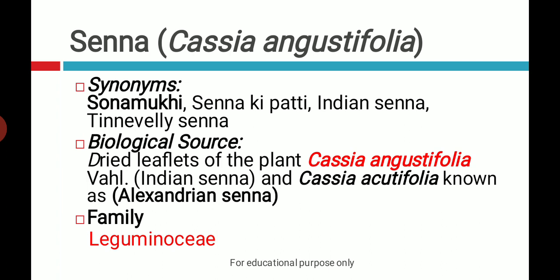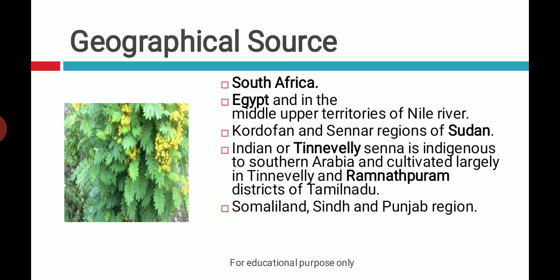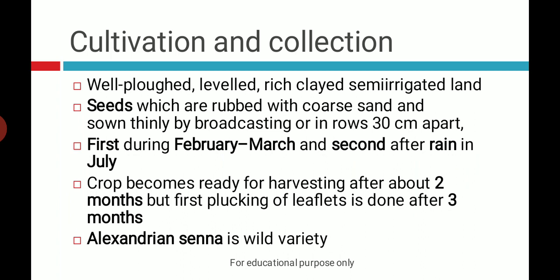Senna leaf, or Indian Senna, is observed in the Tinevali district, hence it is called Tinevali Senna. It is the dried leaflet of the plant Cassia angustifolia, which is Indian Senna, and Cassia acutifolia, which is Alexandrian or wild Senna. Its family is Leguminosae. It is found in South Africa, Egypt, around the Nile River, and in the Sudan region. In India it is observed in the Tinevali and Ramanathapuram district of Tamil Nadu, and also in Somaliland, Sindh, and Punjab regions.